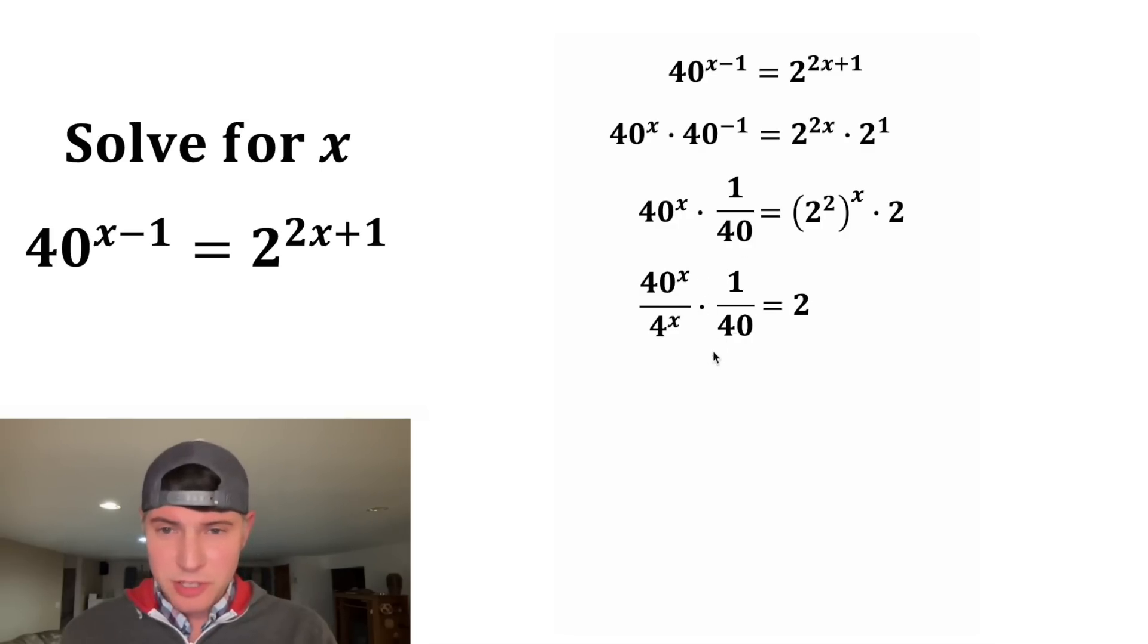Next, let's get the x's alone. So let's take this one over 40 and move it to the other side. We can do that by multiplying both sides by 40. On the left-hand side, this 40 and this one 40th will cancel each other out. And on the right-hand side, 2 times 40 is 80. So now we have 40 to the x over 4 to the x equals 80.